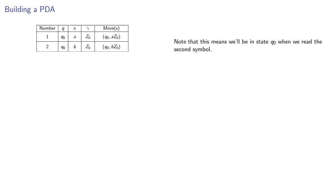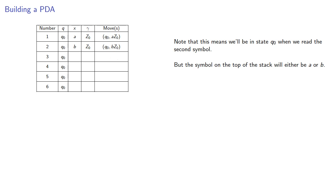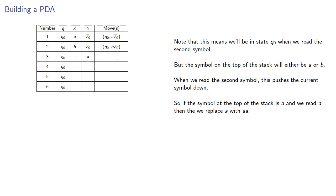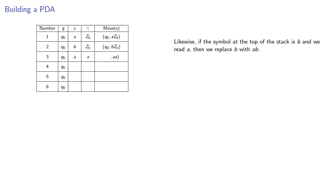This means we'll be in state q0 when we read the second symbol, but the symbol on the top of the stack will be either A or B. When we read the second symbol, this pushes the current symbol down. If the symbol at the top of the stack is A and we read A, we replace it with AA. Likewise, if the top is B and we read A, we replace B with AB, and so on for the other possibilities. Since we're now ready to search for the recurrence, we should change state to q1.